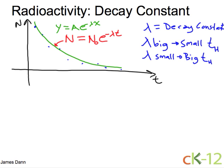Small decay constant means that this curve won't curve too much, which means that the number of counts is staying about the same. And that means that it will take a long time for half the sample to be gone.